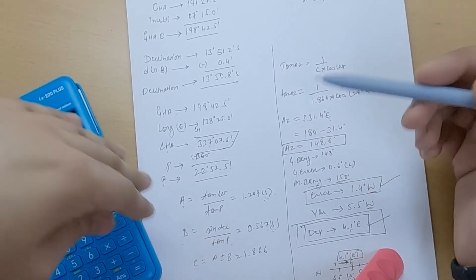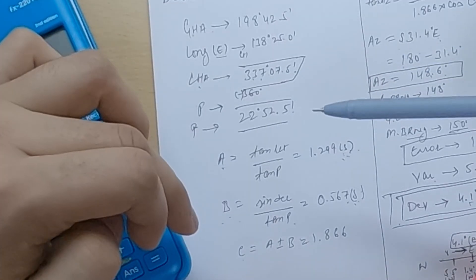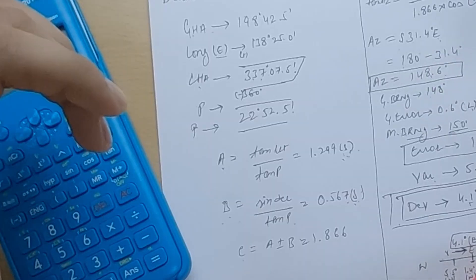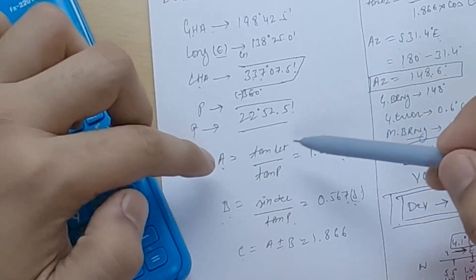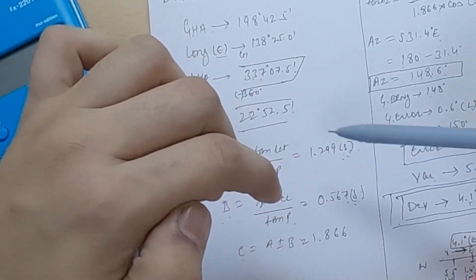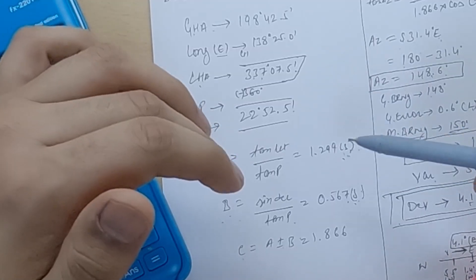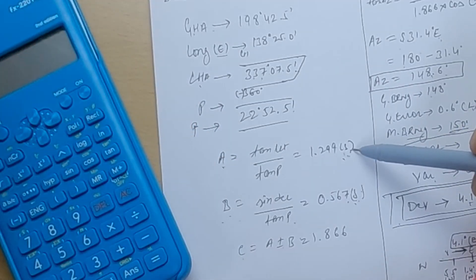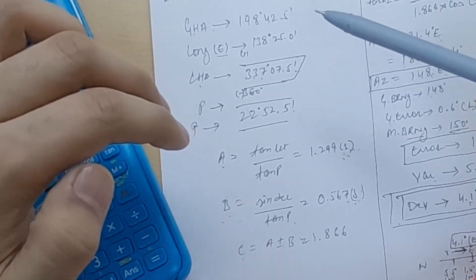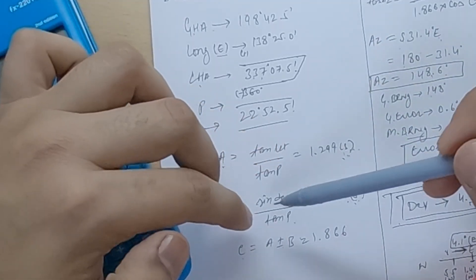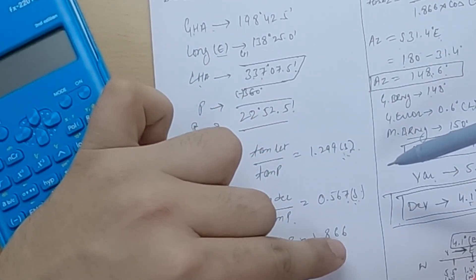Now find C using the formula C = A ± B. If A and B have the same name, add them; if different names, subtract. Here both A and B are south, so you add: C = 1.299 + 0.567 = 1.866, named south.